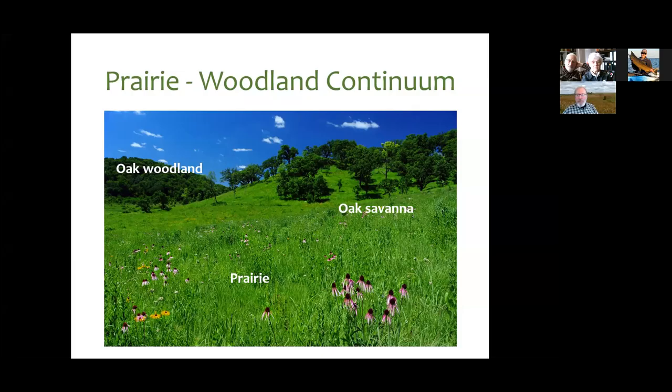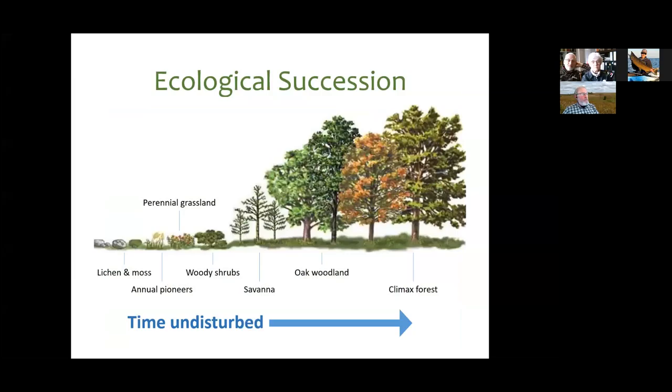Open grassland, prairie oak savanna with scattered trees and prairie plants underneath, and oak woodlands with a grassland understory but a closed tree canopy — what all of these share is that they're fire dependent.